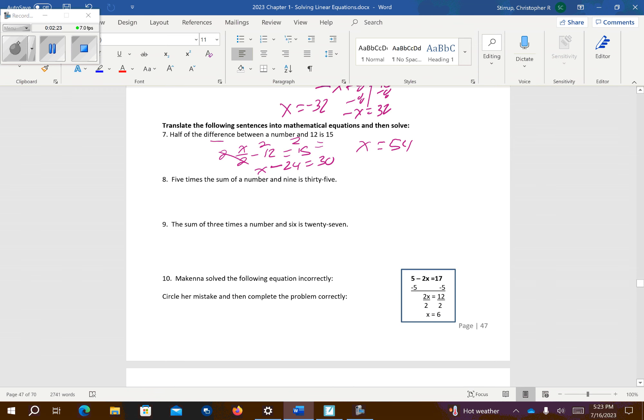Number 9. The sum of 3 times a number and 6 is 27. So sum means plus. This is our equal, is equal. So the sum of 3 times a number and 6 is 27. Go ahead and distribute that. That's going to give me 3x plus 18 equals 27.